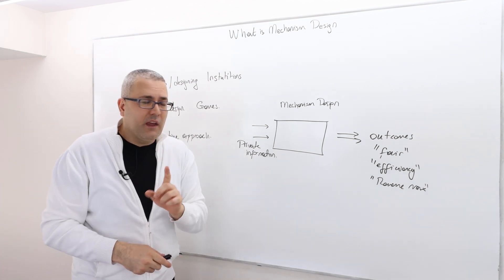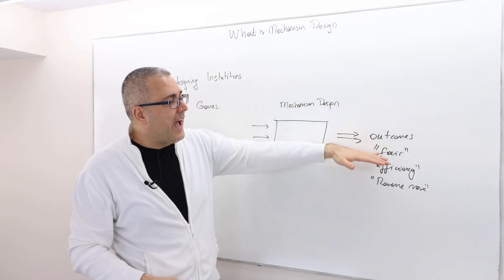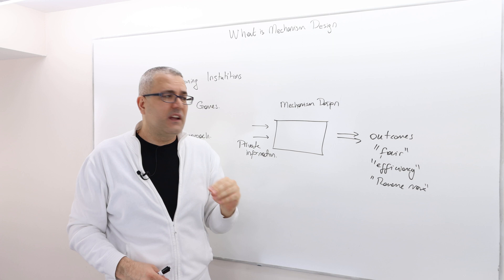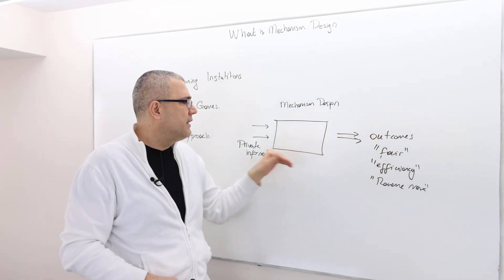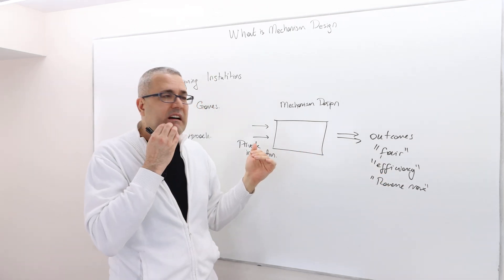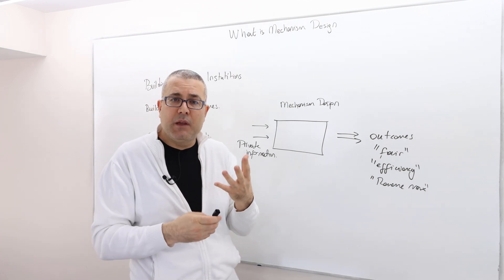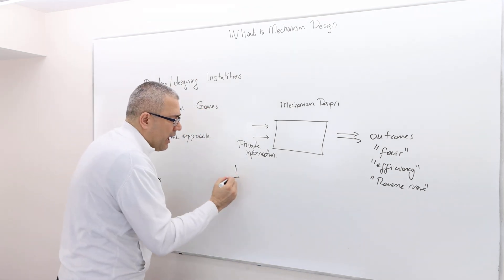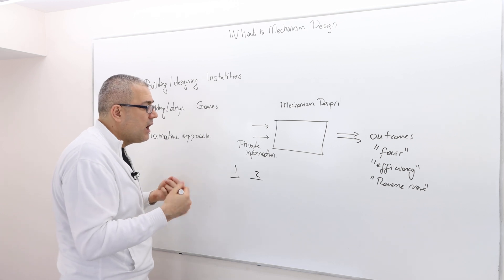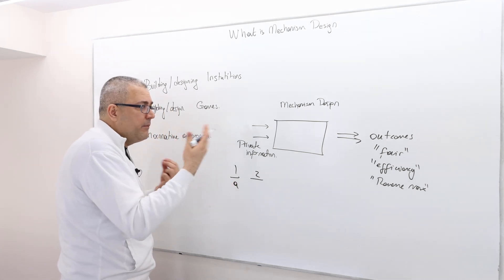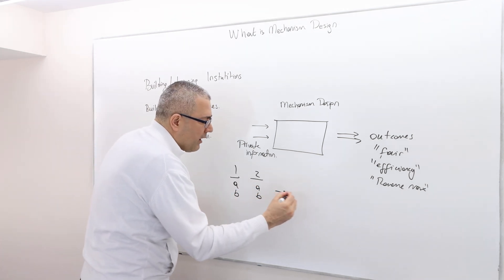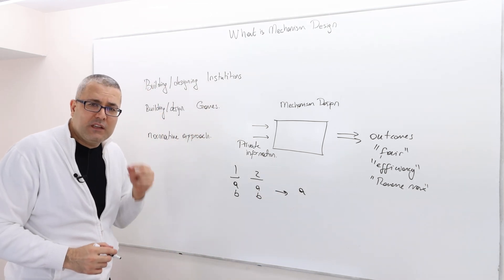One thing to remember: whether an outcome is fair or efficient is subjective in the sense that the fairness or efficiency of an outcome depends on the agents' private information. Think of a voting environment with only two voters choosing between two candidates. If the mechanism designer knows both voters rank A over B, then outcome A is in fact an efficient outcome.